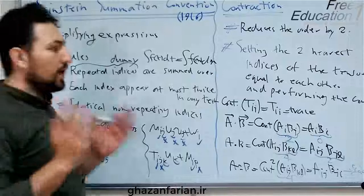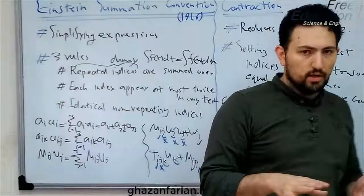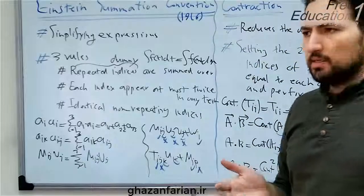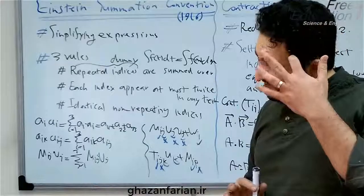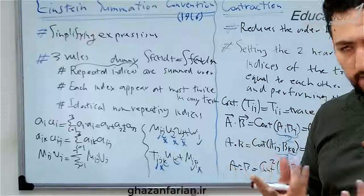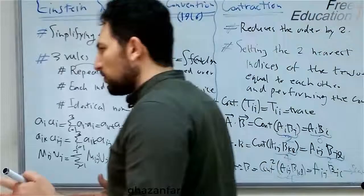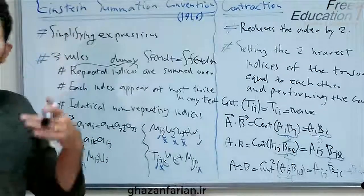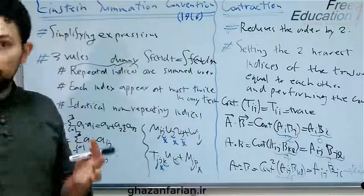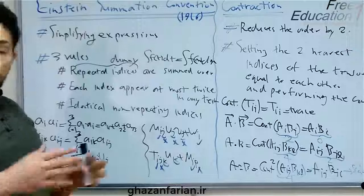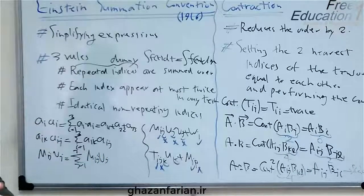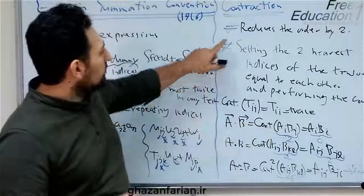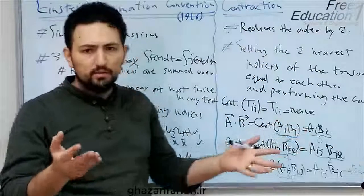Another important concept in vector algebra or tensor algebra is the contraction process. The contraction process is very helpful to find the dot product of two tensors or the double dot product. Generally speaking, the contraction process reduces the order of the result by two.